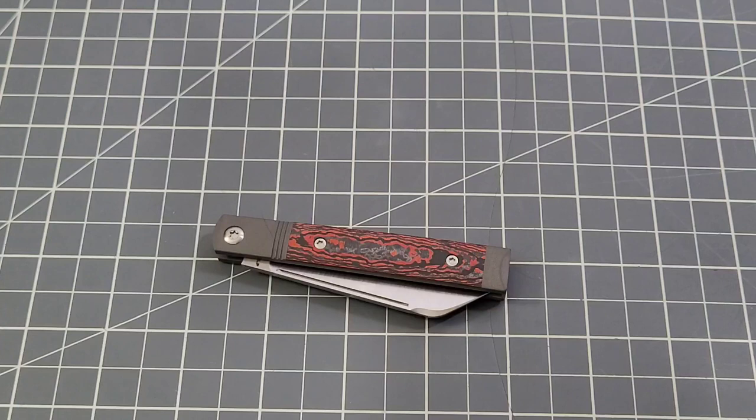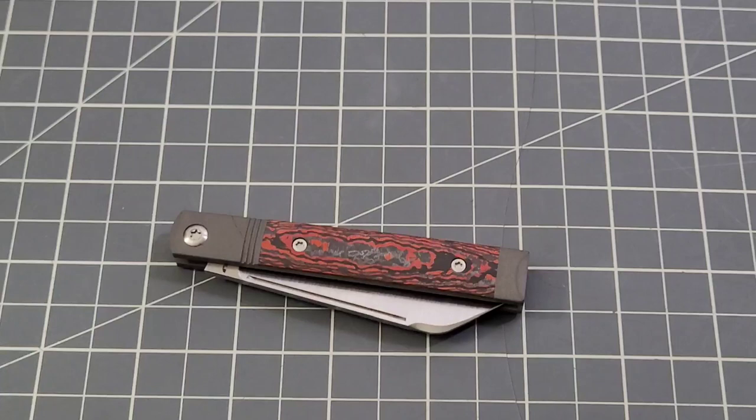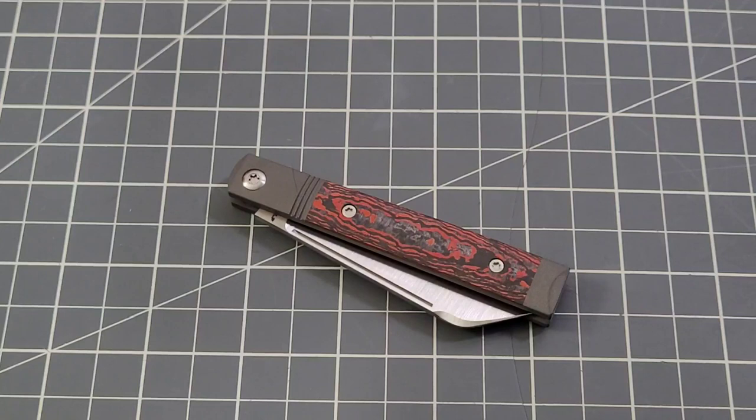You've got five of these models and they're all the carbon fiber. You've got, it's either fat carbon or the camo carbon. Of course you've got the fat carbon lava flow right here.